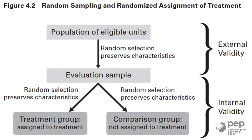The balance of unobserved characteristics is very difficult to obtain with non-experimental methods, and most of the time this issue becomes just an assumption that we cannot test or verify. Randomized control trials give you internal validity because you know that any difference you observe between treatment and control after the program is due to the program.